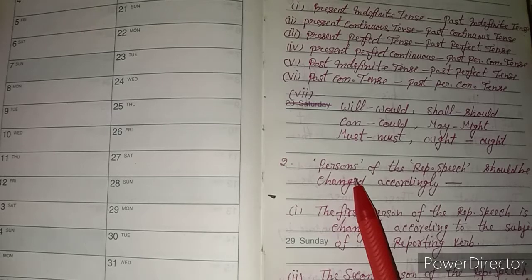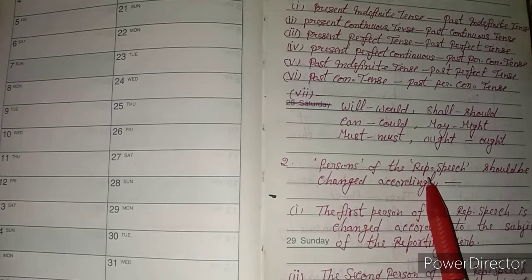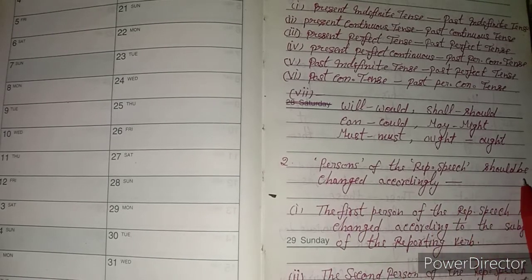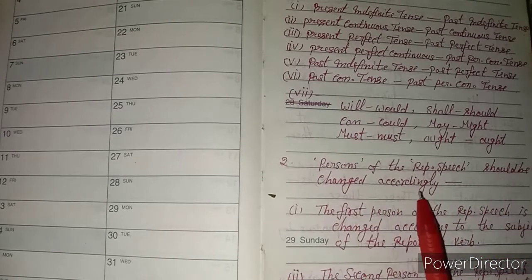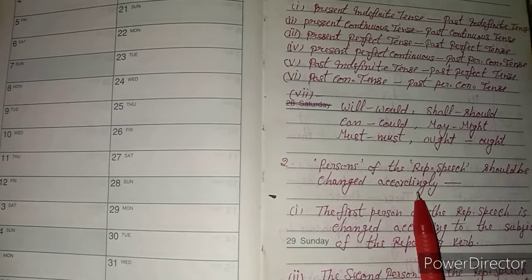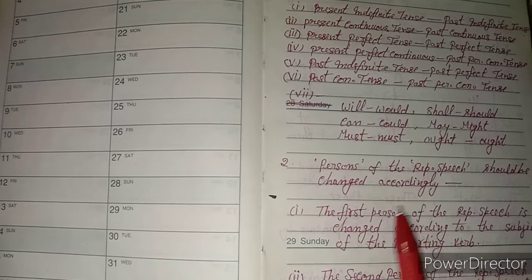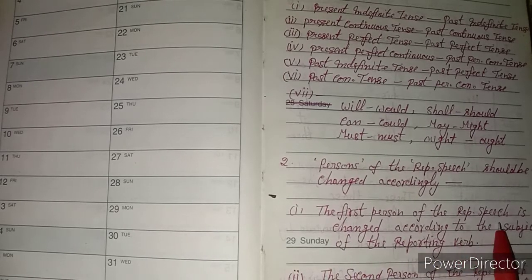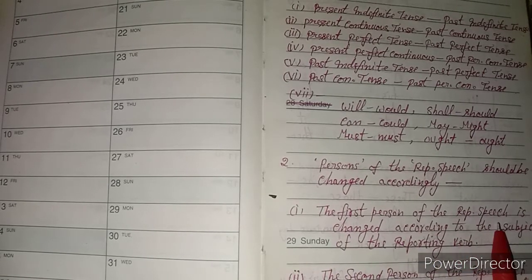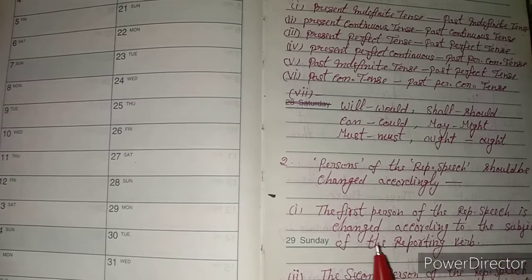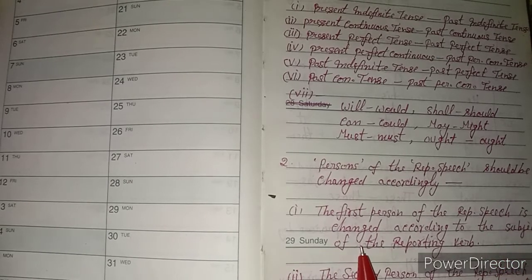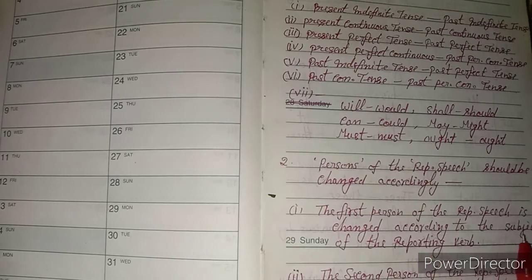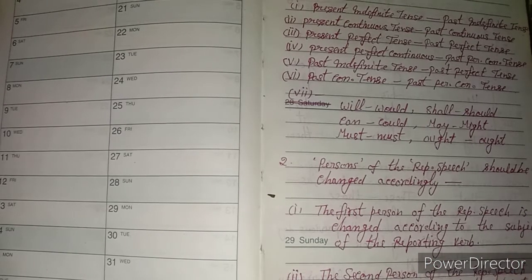Rule number two: the persons of the reported speech should be changed accordingly. The first person of the reported speech is changed according to the subject of the reporting verb.